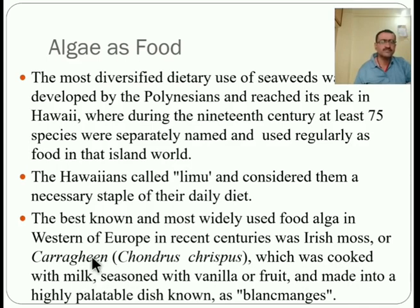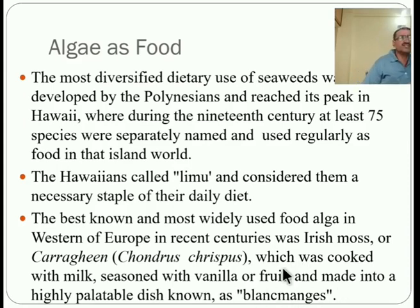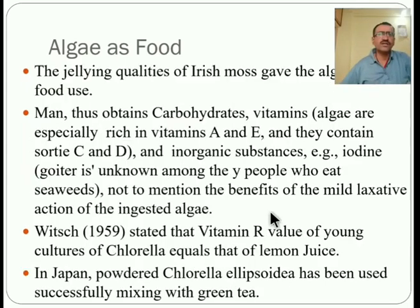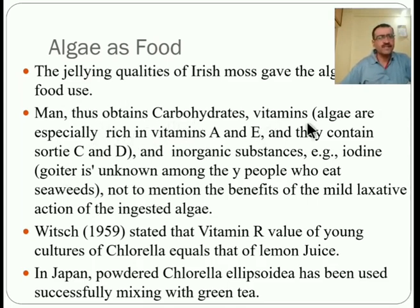Irish moss was cooked with milk, seasoned with vanilla or fruit, and made into a highly palatable dish known as blancmange. The gelling quality of Irish moss gave algae its food-use significance. Through it, humans obtained carbohydrates and vitamins — algae are especially rich in vitamins A, E, C, and D.